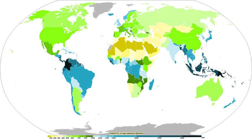A concept used in precipitation measurement is the hydrometeor. Any particulates of liquid or solid water in the atmosphere are known as hydrometeors. Formations due to condensation, such as clouds, haze, fog, and mist, are composed of hydrometeors. All precipitation types are made up of hydrometeors by definition, including virga, which is precipitation which evaporates before reaching the ground. Particles blown from the Earth's surface by wind, such as blowing snow and blowing sea spray, are also hydrometeors, as are hail and snow.